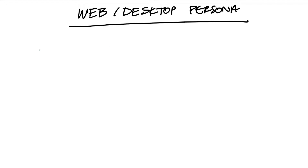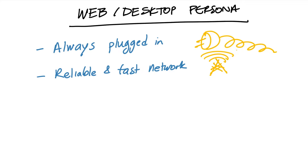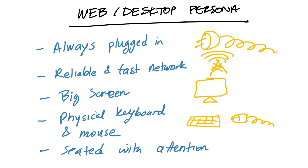The first thing is that they're always going to be plugged into power. They generally have a constant internet connection that's usually fast. And generally they have a pretty big screen, some sort of physical keyboard and a mouse or a touchpad. And they're seated with their full attention usually on their laptop or their desktop.